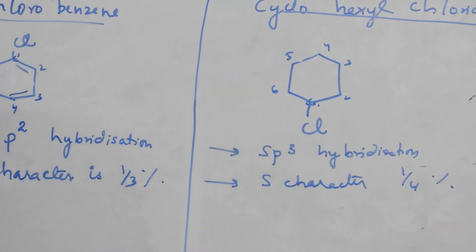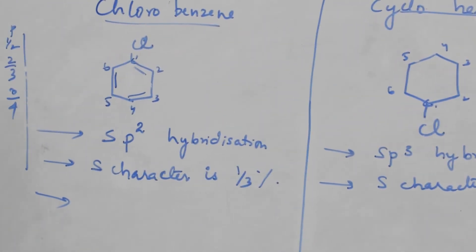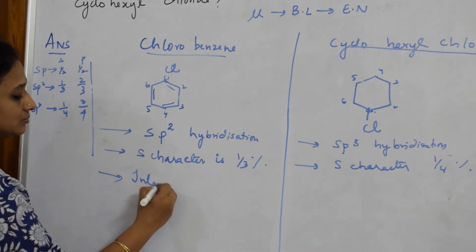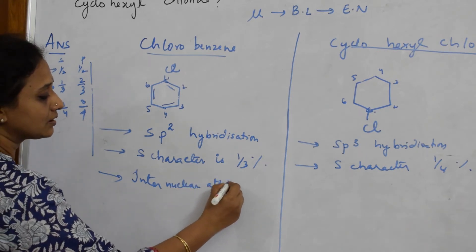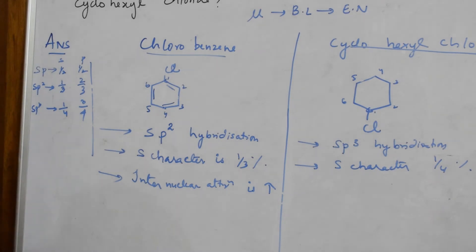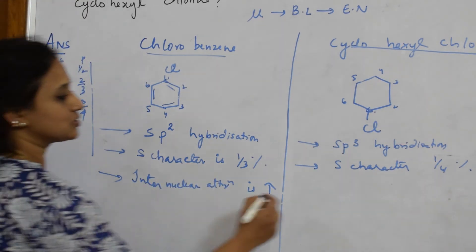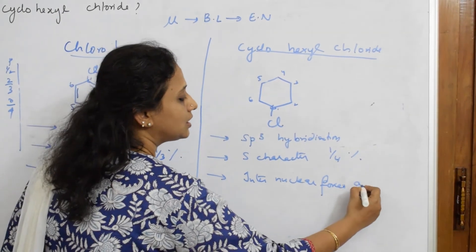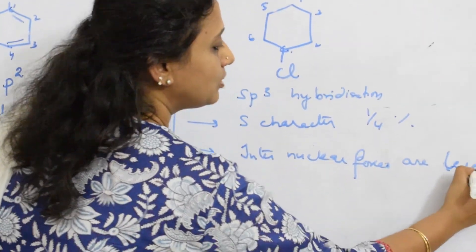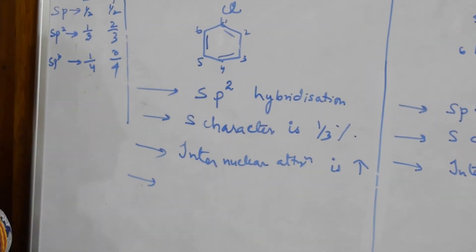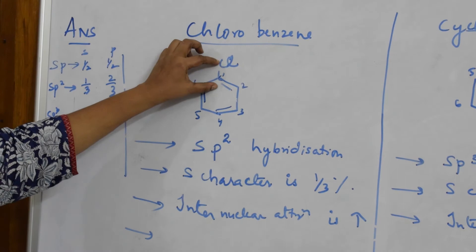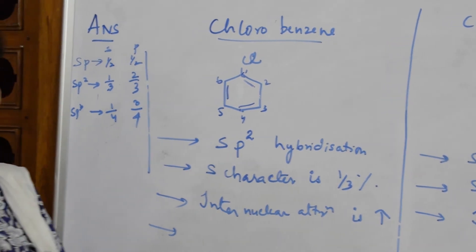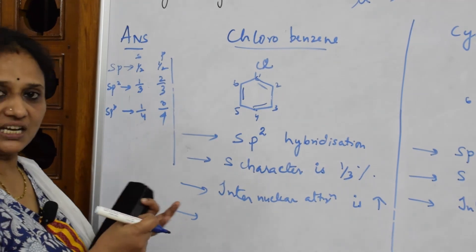When s character is greater, the internuclear force of attraction is greater, meaning the pull on electrons is stronger. In cyclohexyl chloride, with lower s character (1/4), the internuclear forces are less. This means that in chlorobenzene, the carbon is more electronegative in nature due to higher s character.